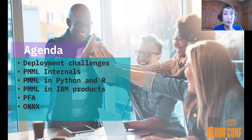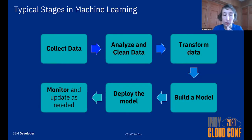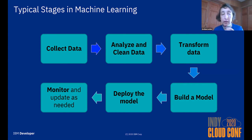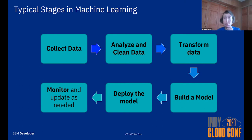Today we'll talk about some of the challenges of model deployment and then three open standards that help overcome those challenges. Machine learning consists of several different stages: collecting, analyzing, cleaning, and transforming data, then building many models and picking the best one. But you're not done — you have to put that model into production to get predictions that help your business actually make money, and that sometimes is not easy.